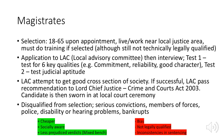Moving on to the next topic: magistrates. For selection, you must be aged 18 to 65 upon appointment and live or work near the local justice area. If selected you must enter training, although you're not technically legally qualified. Applicants apply to the Local Advisory Committee and then interview. Test one is to test for six key qualities, which includes commitment, reliability, and good character. Test two is a test for judicial aptitude — how good you are at decision-making. The LAC attempts to get a good cross-section of society, and if successful passes a recommendation to the Lord Chief Justice. This is in relation to the Crime and Courts Act 2003.